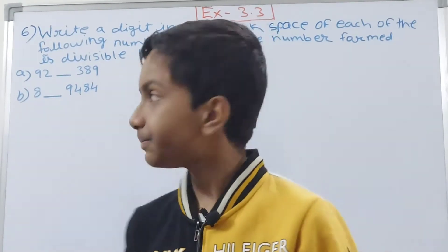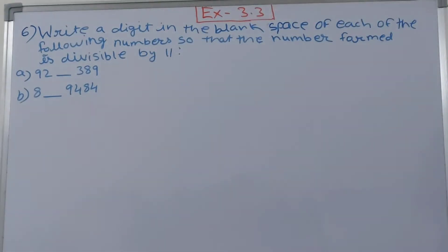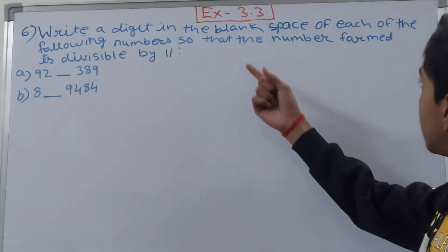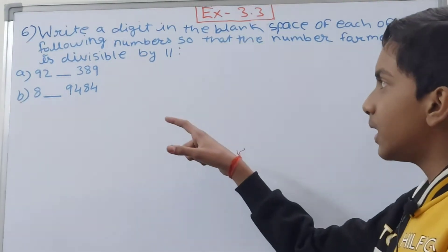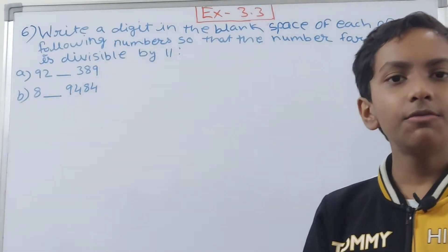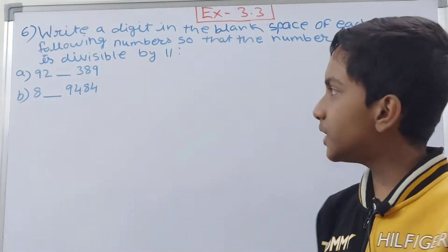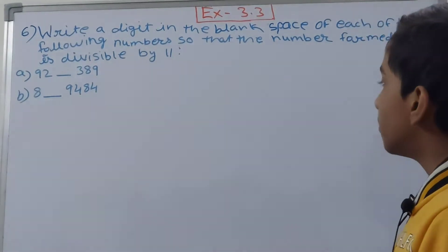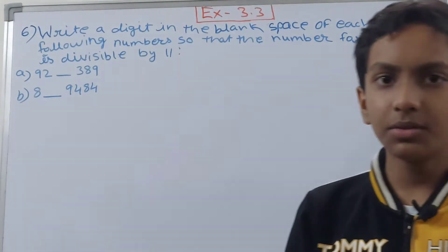This question says write a digit in the blank space of each of the following numbers so that the number formed is divisible by 11. Some numbers are given and there is a blank between those numbers. We have to write a digit in that blank so that the number formed is divisible by 11.